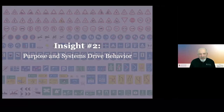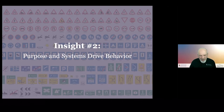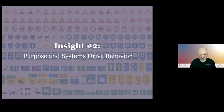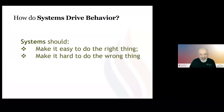The second insight from our research was that purpose and systems drive behavior. We found a lot of people would be really excited to come to work and do great work if they understood the purpose of the organization and bought into it. But the other thing we found is that if leadership does not make it easy for people to do the right thing — if they still have to do something hard to behave ideally — over time they'd quit doing that ideal behavior. What do we mean when we say systems drive behavior? Systems should make it easy to do the right thing and make it hard to do the wrong thing.